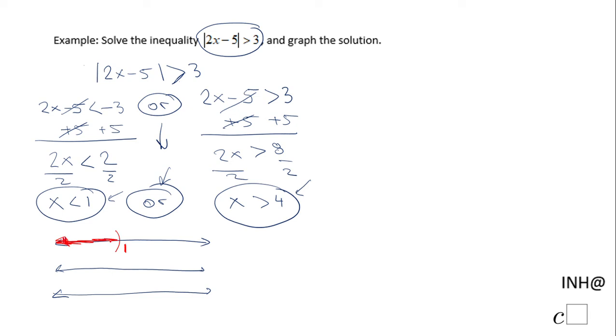The second one says number greater than 4, so this is 4. I have to shade it to the right of 4. And like I said, in the third one we're gonna put them together. So I'm gonna have 1 here and shade the left side, 4 here and shade the right side.